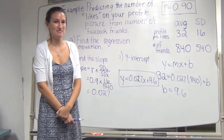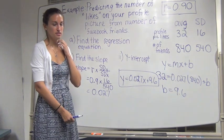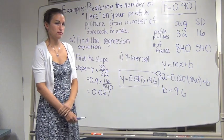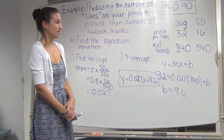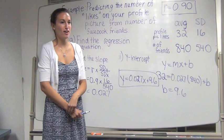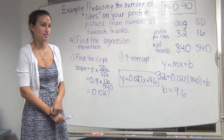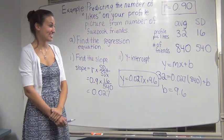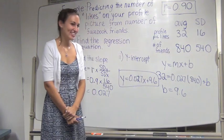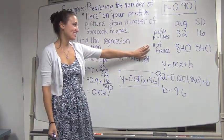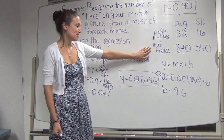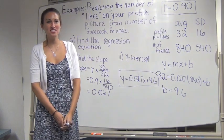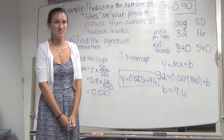So the slope would mean then - so x is the number of friends, right? Correct. X is the number of friends, y is the profile. So then the slope means for each extra friend, you're going to get 0.027 of a like? Yes, that is true. So for every increase in friends, for each friend you get, you're going to get 0.027 more likes. Are there any other questions? Alright, sounds good.